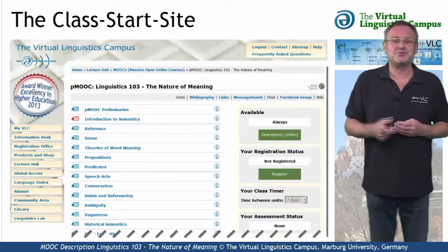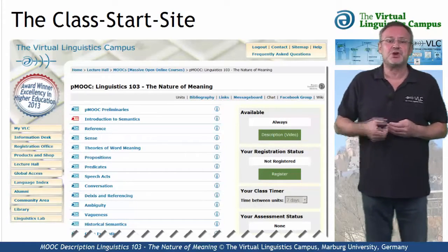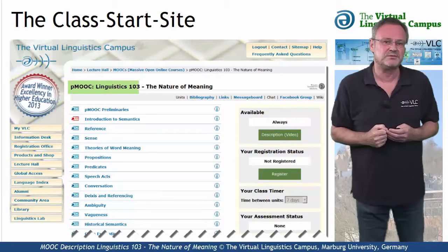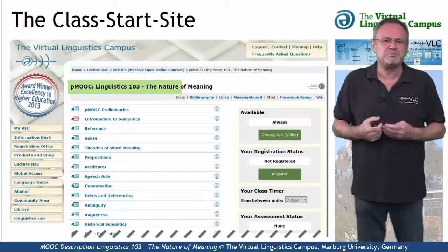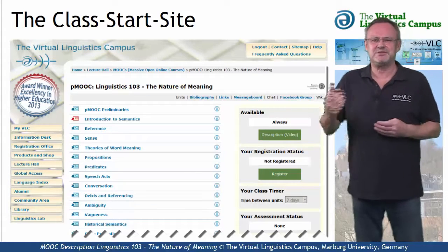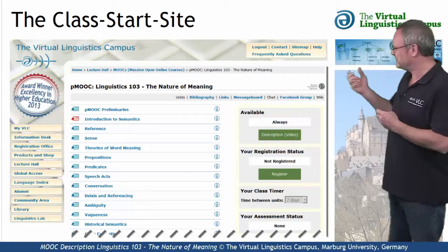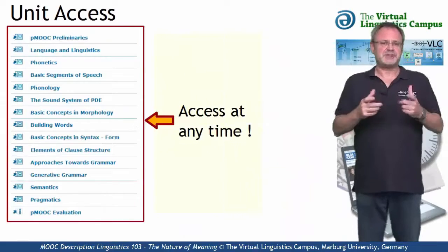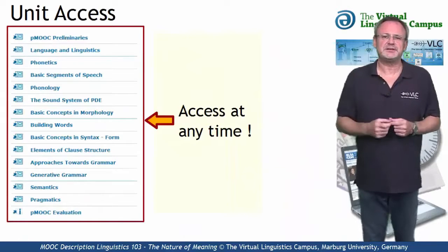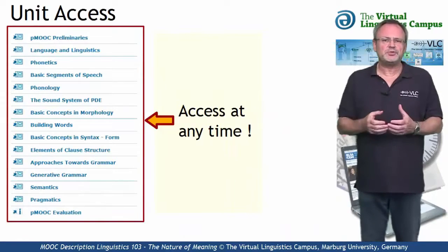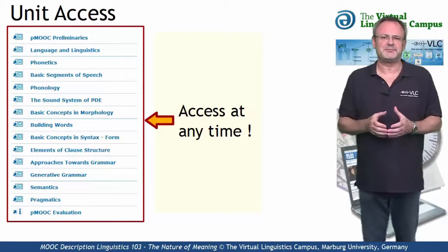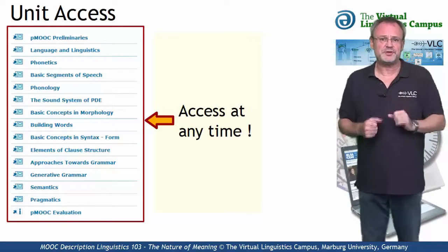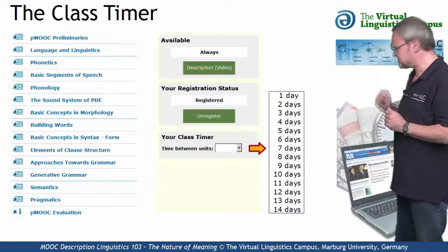Furthermore, and this is a novelty in the world of online courses, your class is a permanent MOOC, a PMOOC. But how does such a PMOOC work? Here are the central principles of using a VLCP MOOC. Central to our PMOOCs is the idea that you have access to all units of a class at any time. However, if you wish, you can also define your own fixed rhythm using the class timer.